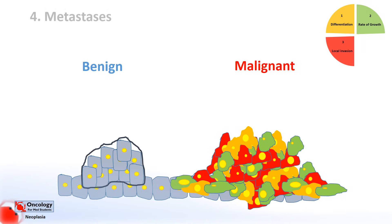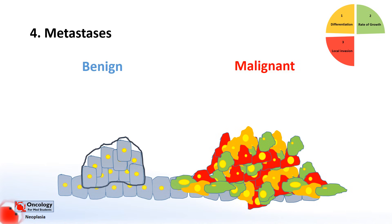So finally, metastasis. Metastasis means spread. This is said to occur when new tumors appear in other parts of the body that are separate from the original or primary tumor. Spread occurs by the bloodstream, the lymphatic system, or body cavities, and this is the other main difference between benign and malignant tumors.